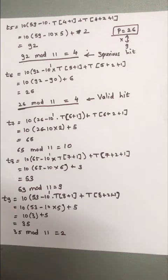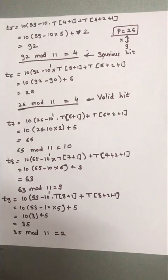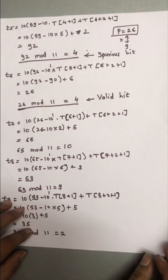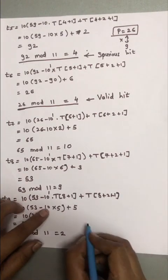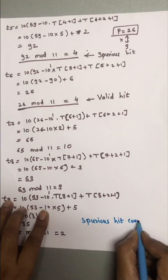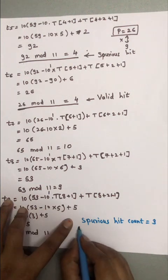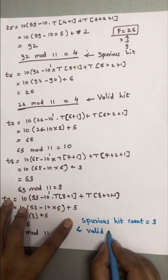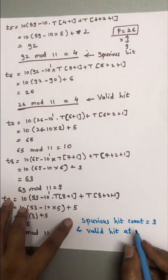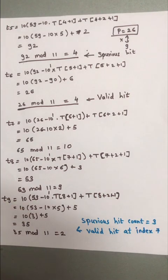This is how we solve the Rabin-Karp string matching problem. We found the valid hit at index 7. As for the question asking how many spurious hits were encountered: there were exactly 3 spurious hits in this example. Spurious hit count equals 3. Thank you so much.